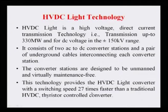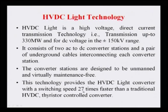HVDC Light converters have a switching speed 27 times faster than traditional HVDC thyristor-controlled converters. This high switching speed is why VSC-based HVDC can overcome the problems of conventional HVDC and achieve all the advantages described — independent real and reactive power control, fast AC voltage control, and passive load connection.